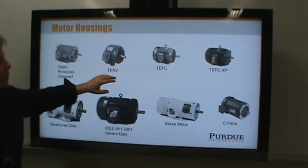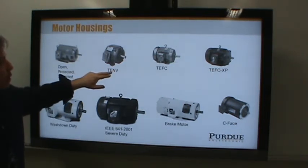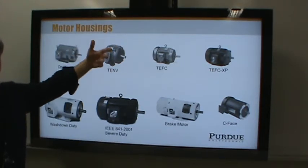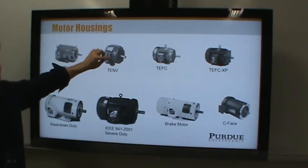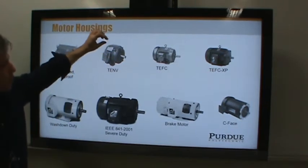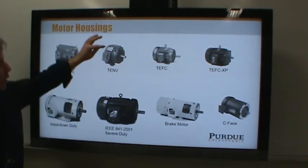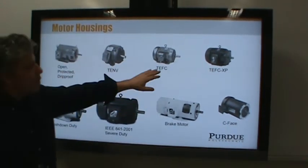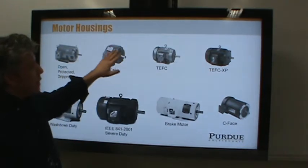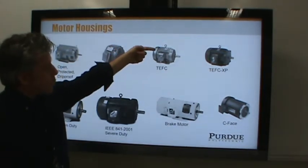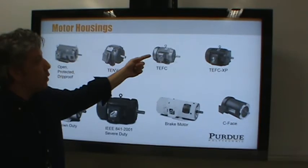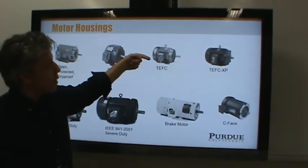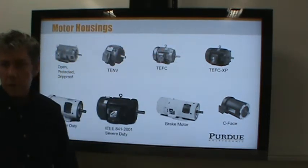There's also TENV — Totally Enclosed Non-Ventilated. There are no holes in this at all. To get the heat out, they include fins so you can transfer heat by conduction and convect it away, preferably by a fan mounted on the motor. The TEFC — Totally Enclosed Fan-Cooled — has a sheet metal shroud on the back covering the fan, which is mounted to the rotor. As the rotor turns it pulls air across the heat exchanger fins.